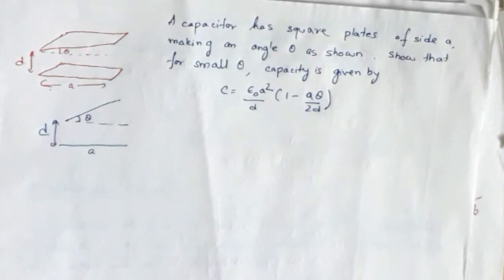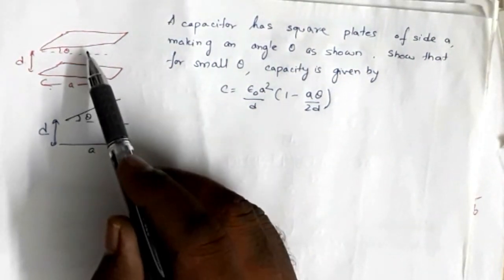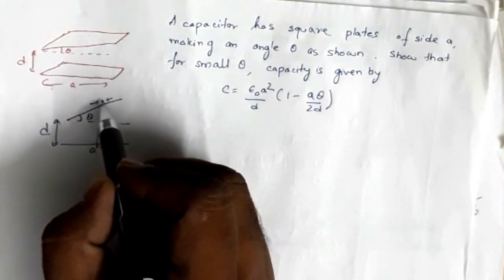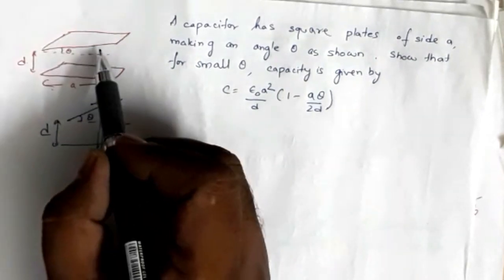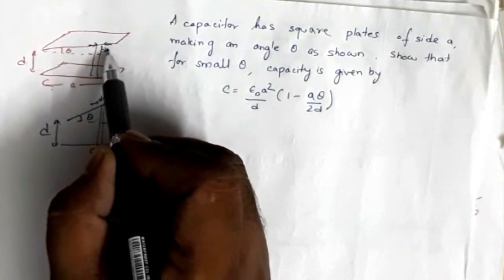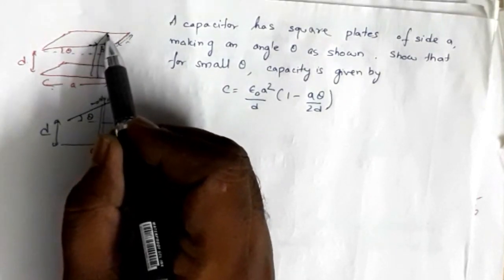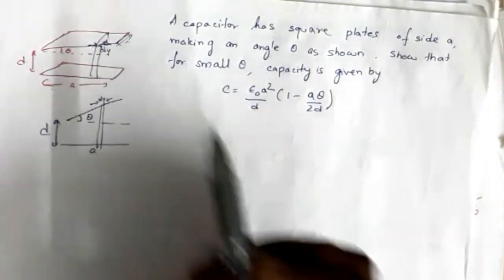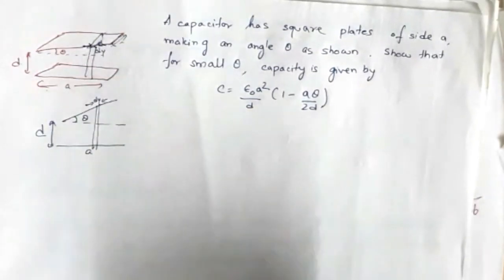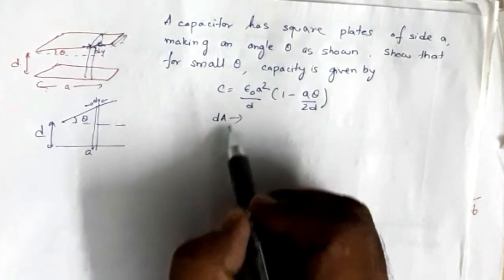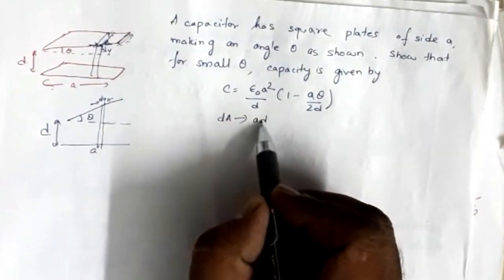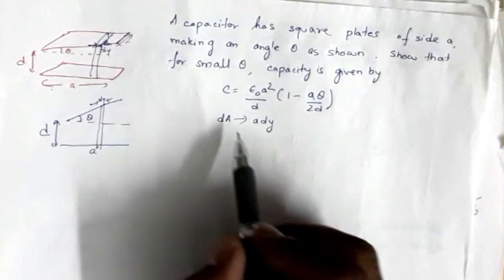This is a very good problem on capacitors. To proceed, we take a small section of this system which is of thickness dy. So I have taken a strip of length dy. Since this is a square plate, this complete strip will have an area. This is a and this is dy, so the area of this differential element will be dA = a·dy.